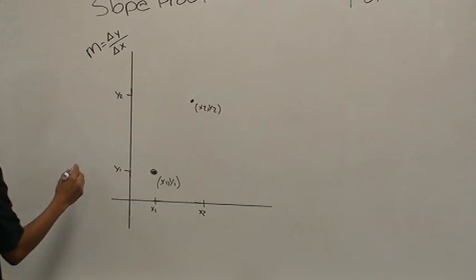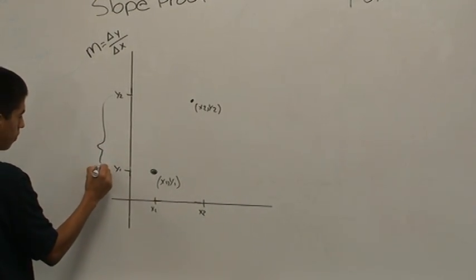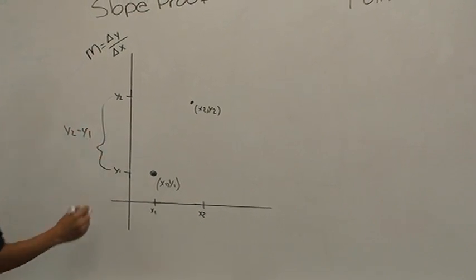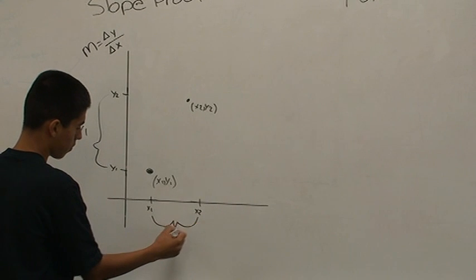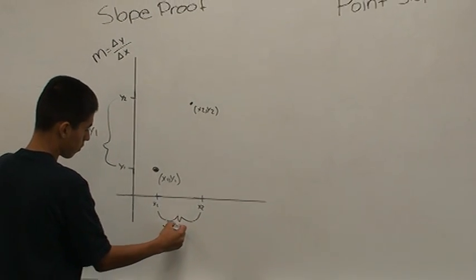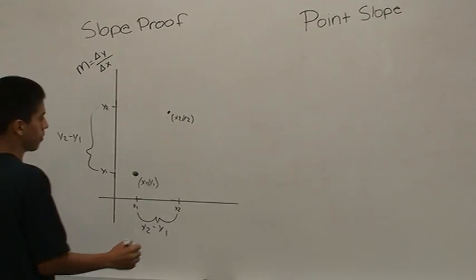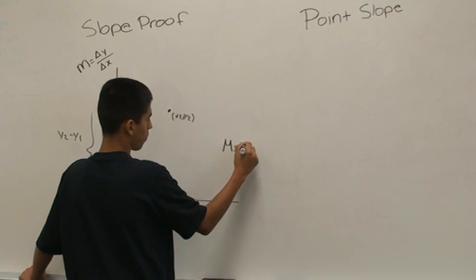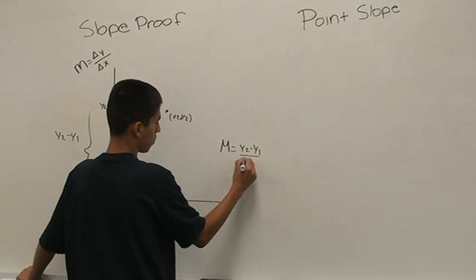The change in y is defined as the difference between y2 minus y1. The change in x is the difference between x2 minus x1. We then substitute these values in for m, m equals the change in y, which is y2 minus y1 over x2 minus x1.